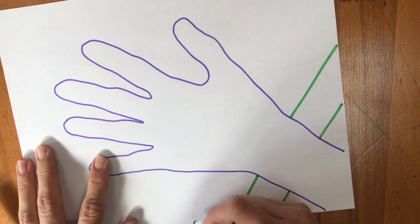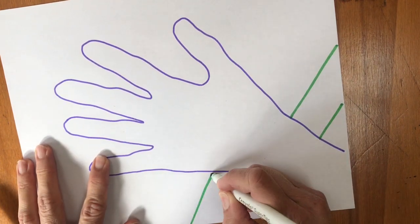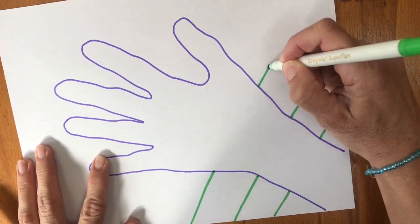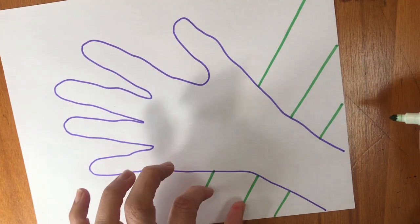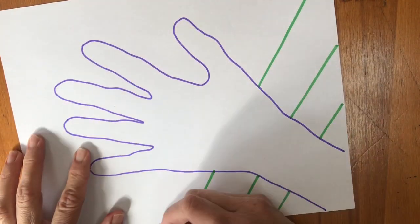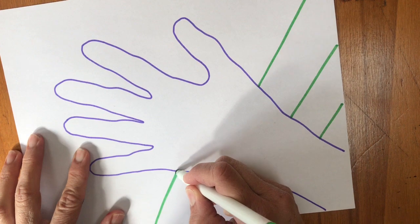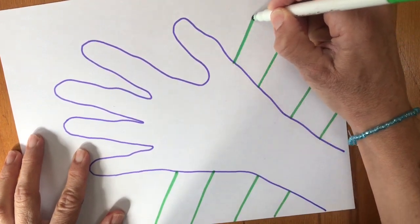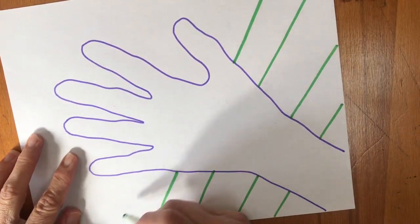You could use a ruler, but you do not need to. This does not need to be perfect. You want to just line them up, and right now these are pretty wide because I think that helps keep it organized a little bit easier for you guys.